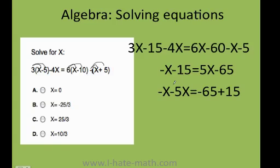And I get in the first part, there we go. So 3 times x is 3x, 3 times negative 5 is negative 15. Then I have negative 4x. 6 times x is 6x, 6 times negative 10 is negative 60. Then negative 1 times x is negative x, and negative 1 times 5 is negative 5.